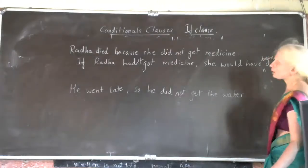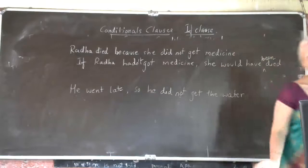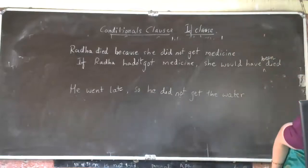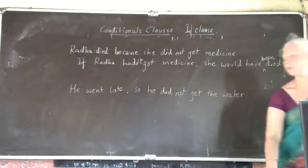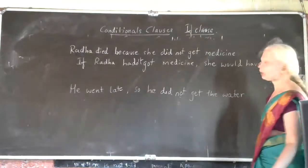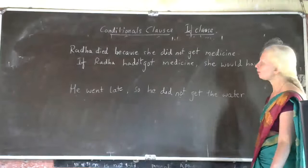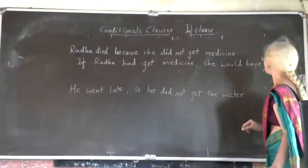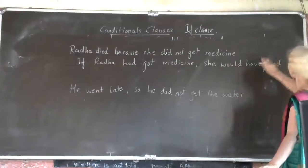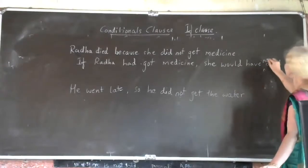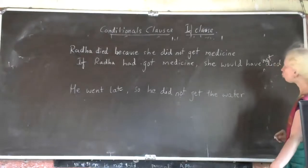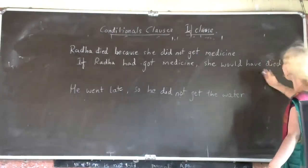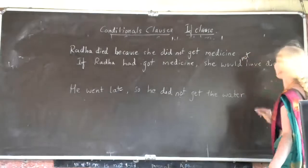Not correct. Read the sentence once again. Who will help Swati? Who will help Swati to correct it? Yes, Abhira, tell me the answer. If Radha had got the medicine, she would not have died. Yes — if Radha had got the medicine, she wouldn't have died.